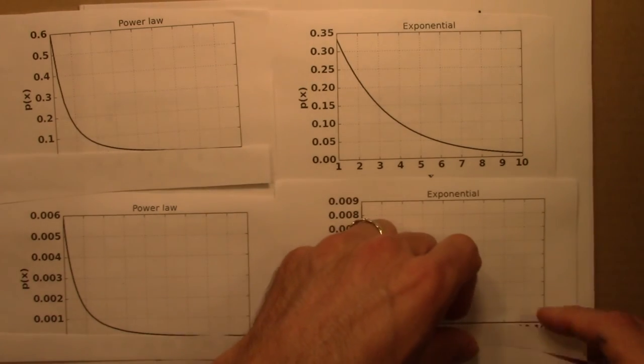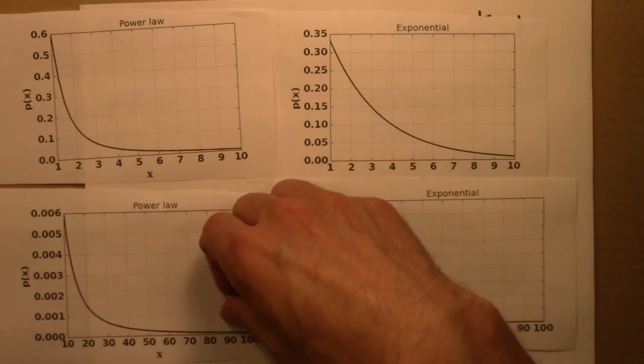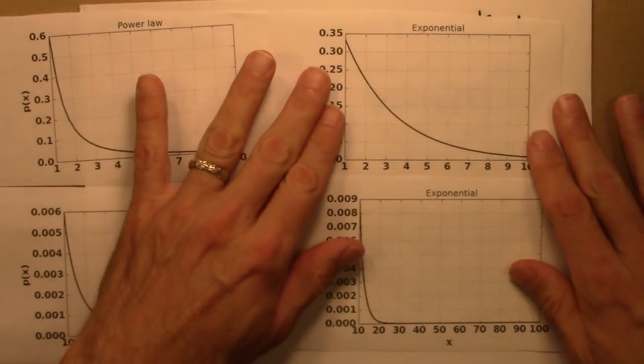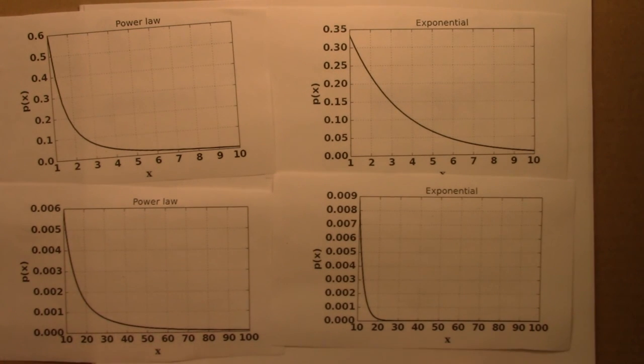So we would say that the power law distribution is a scale-free distribution. It's a power law no matter what scale you look at it. Whereas the exponential distribution, and in fact all other distributions, are not scale-free.